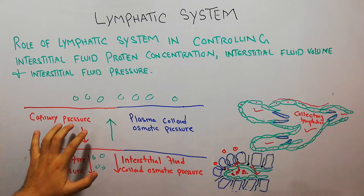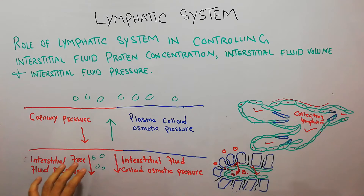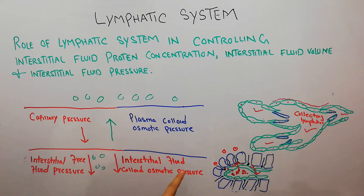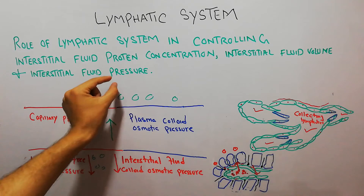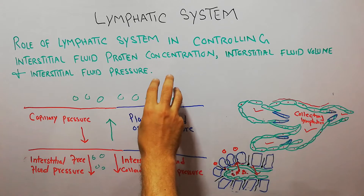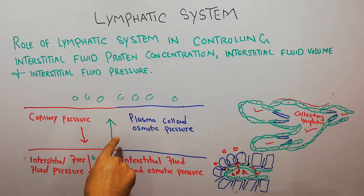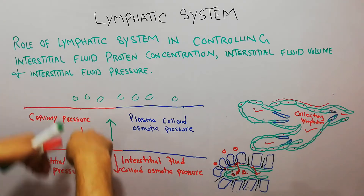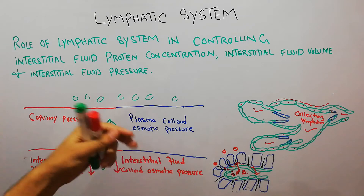Three forces are trying to take the plasma out of the capillary into the interstitial spaces: the capillary pressure is pushing the fluid out of the capillary; the interstitial free fluid pressure is also trying to pull fluid out; and the interstitial fluid colloid osmotic pressure — due to proteins present in the interstitium — is also pulling fluid out. The biggest force pulling fluid from the interstitium back into the capillary is the plasma colloid osmotic pressure, which is due to proteins in the blood.